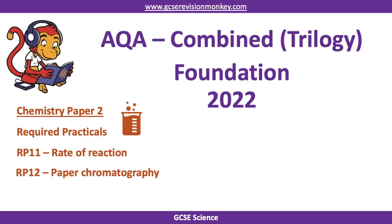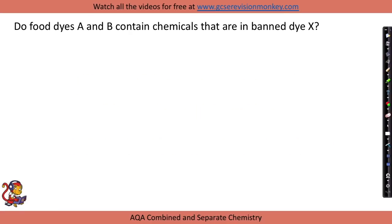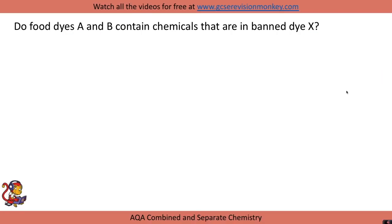Paper chromatography is used to separate coloured substances. In this practical you may be asked a question like: do food dyes A and B contain chemicals that are in banned dye X? We're going to separate three dyes — A, B, and X — and compare the patterns. In your exam they might refer to inks or other coloured substances, but the process is the same.